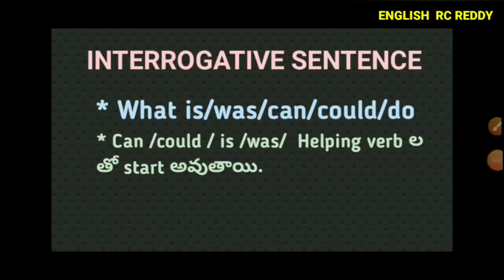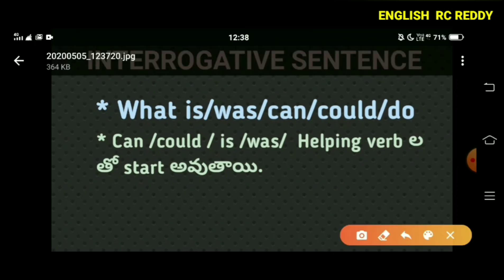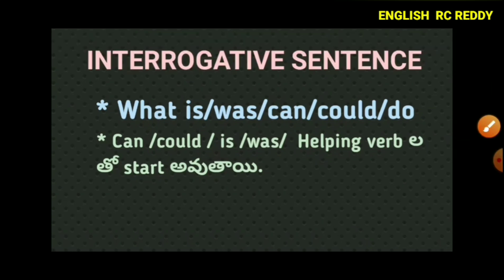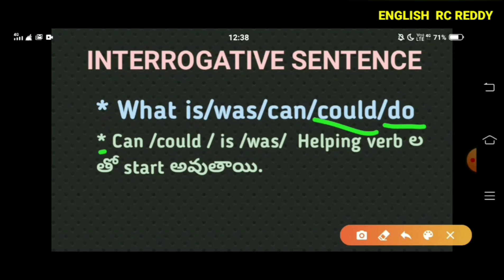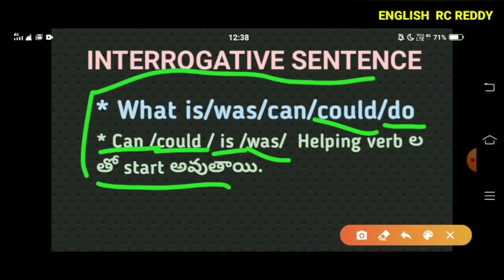The next type is the interrogative sentence. An interrogative sentence means a question, and it ends with a question mark. Examples include: 'What is your name?', 'What was your duty?', 'What can I do for you?', 'What could you do?', 'What do you do?', 'Can you come?', 'Could you go there?', 'Is this your car?', 'Was there a book?' It's very easy!